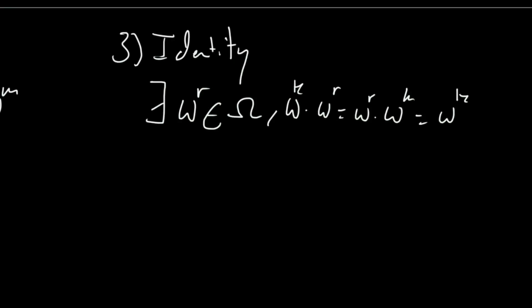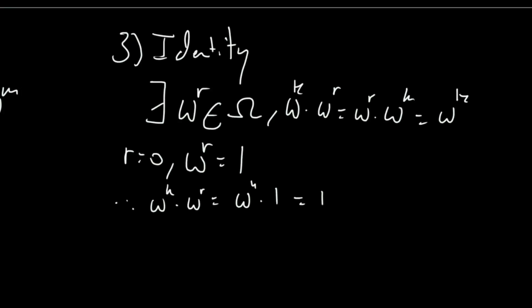This is probably the most trivial to prove. We consider r equals 0, so that omega to the r equals 1. Therefore omega to the k times omega to the r equals omega to the k times 1 equals 1 times omega to the k equals omega to the k. So the identity element is omega to the zero, which equals 1, and we know that 1 is a member of the set.